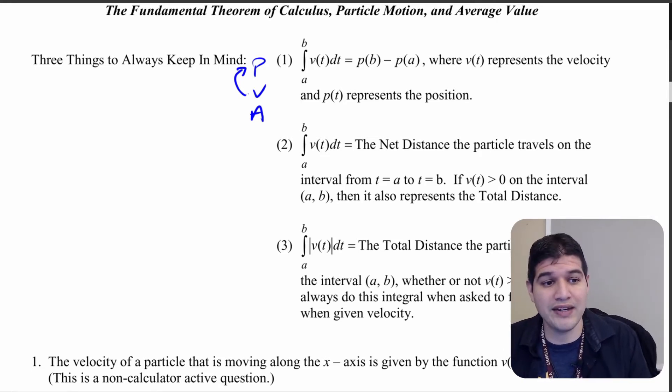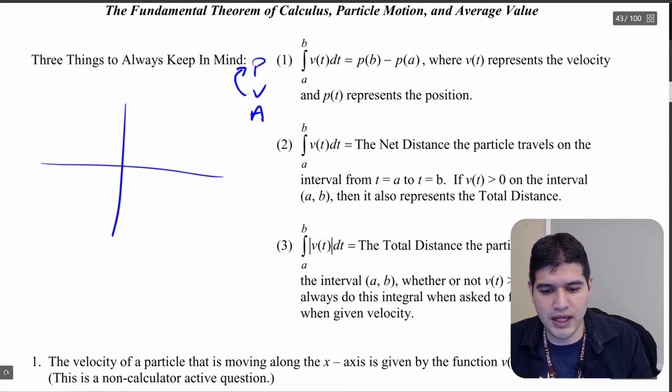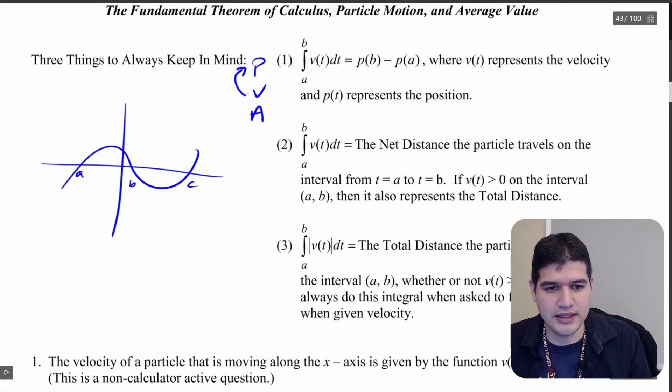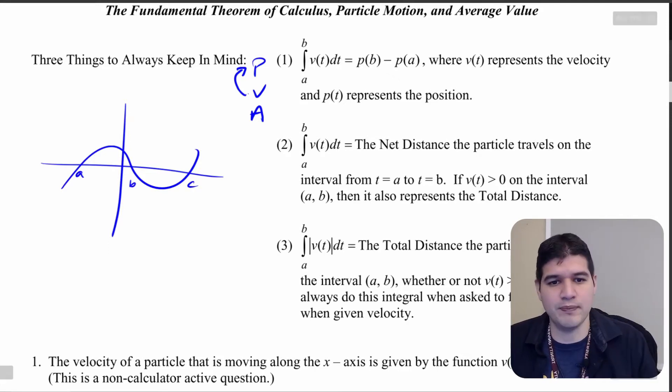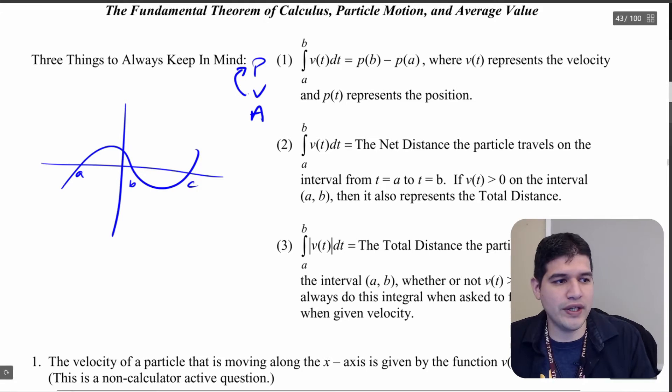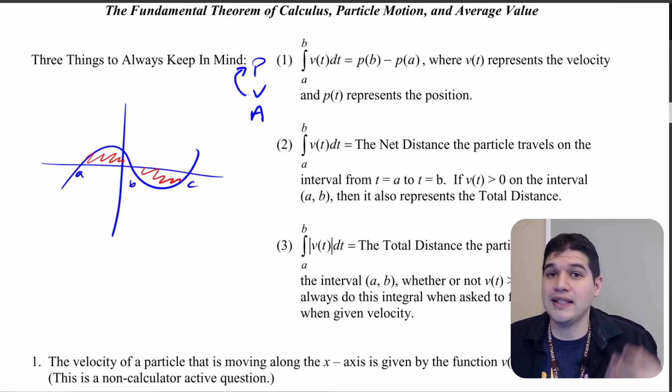We've covered that in a previous video and I want to draw a graph real quick because what you want to keep in mind when you're doing something with net distance. If we have like a, b, c, we're going from a to c. You want to keep in mind that you're going in the positive direction when you're above the x-axis and you're going the negative direction when you're below the x-axis. So net distance might end up being something smaller than your total distance.